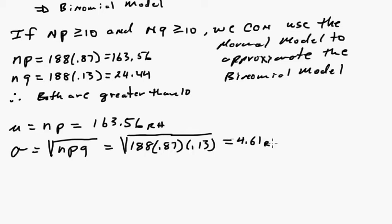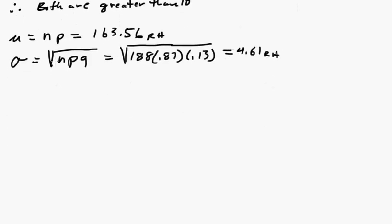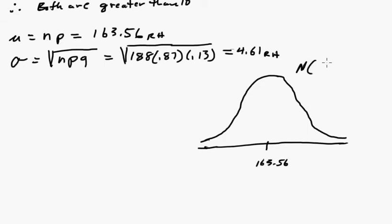These are right-handers that we're talking about out of this sample. So because we did that check and because we computed these things we now sort of have a model so it's important to draw this model. So the center is going to be 163.56.